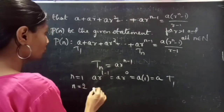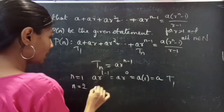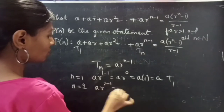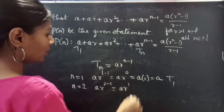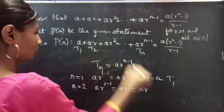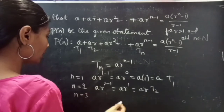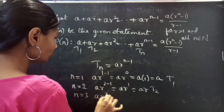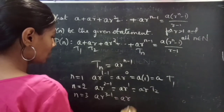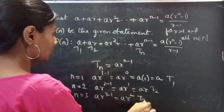When n equals 2, put 2 in place of n and get a times r to the power 2 minus 1, which equals ar to the power 1, equals ar — that is the second term. Likewise, if you put n equals 3, you get a times r to the power 3 minus 1, which is ar squared — the third term.